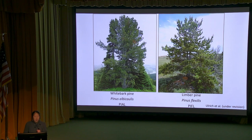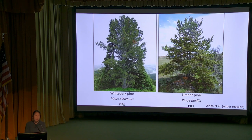Both whitebark and limber pine inhabit high elevations, are slow growing, and are long-lived. Whitebark pine can live up to 1,500 years old and limber pine can live up to 3,000 years old. They are long-lived five-needle pines found at high elevations that are often windy, dry, bright, sunny, and harsh environments.